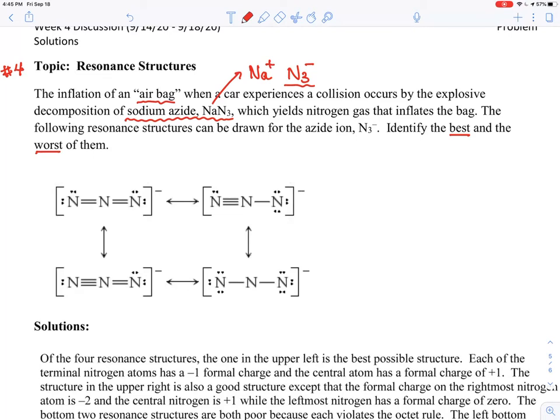So the best resonant structure means charge delocalization. Charges are not localized and spread out with a minimum development of the formal charges. Worst is charge delocalization and the disobey of the octet. So because nitrogen is involved, nitrogen has five valence electrons. Okay, so nitrogen is five.